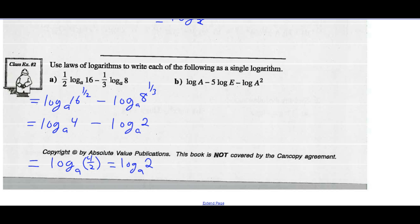Looking at example B, write this as a single logarithm. Well, first I'm going to say log A subtract the log of E to the fifth. Let's use my power law to bring this 5, coefficient of 5 as an exponent on the argument. And minus the log of A squared. And I can write this as a single logarithm. So I've got the log of A and I'm subtracting the log of E to the fifth. So that means I'm going to divide by E to the fifth. And I'm minusing the log of A squared, so I'm also going to divide by A squared if I write this as a single logarithm.